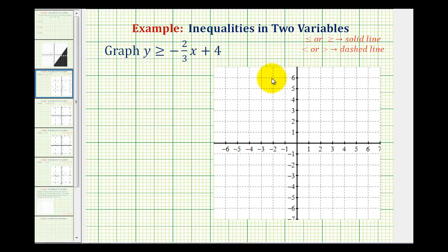We want to graph y is greater than or equal to negative 2/3x plus 4. To graph this, we want to graph the region where all the points would have ordered pairs that satisfy the given inequality.